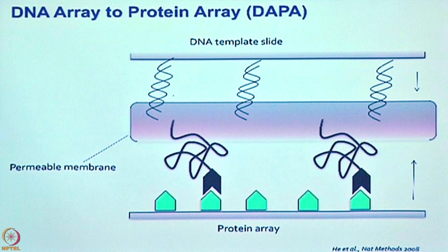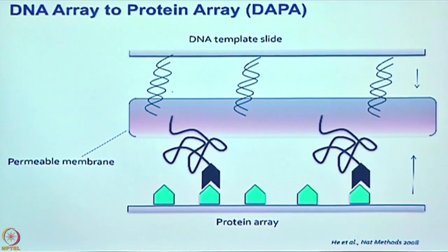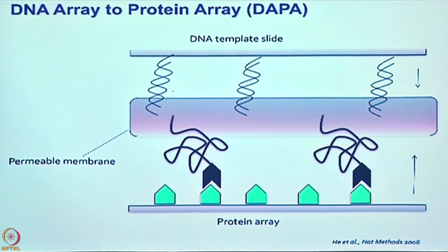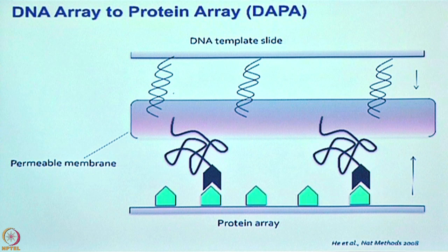Another approach using cell free expression based arrays was DAPA — DNA Arrays to Protein Arrays. In this case, you have a template slide where DNA is printed, and then through a permeable membrane containing in vitro transcription and translation mix, proteins are synthesized and pass through. If the proteins have a histidine tag and another chip is coated with nickel-NTA, the proteins bind to that chip, which serves as the protein arrays. This results in a much purer protein array because only the purified protein leaches out and gets printed on the chip. However, it has problems with diffusion, which prevented it from becoming very popular.